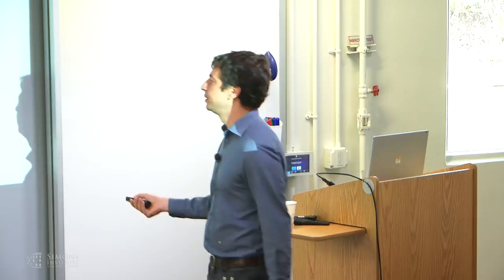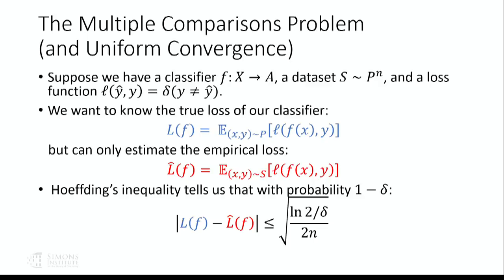Hoeffding's inequality allows us to put confidence intervals around our empirical estimates. With probability one minus delta, the difference between our empirical estimate of the loss and the true loss is something going to zero on the order of one over the square root of the number of data points. So that's pretty good. But that's not the multiple comparisons problem — that's estimating a single statistic. The multiple comparisons problem is what happens when we've got more than one statistic.